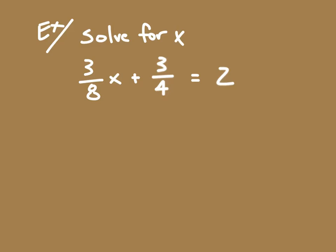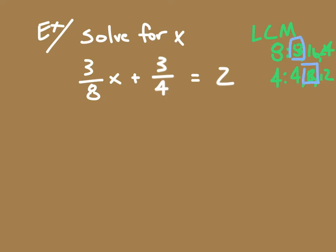Now on an equation like this: three-eighths times x plus three-fourths is equal to two. We want to look at what's our common denominator to eliminate our fractions. We want to find the least common multiple, or LCM. I look at both denominators, which are eight and four, and find the multiples of eight: 8, 16, 24. Multiples of four: 4, 8, 12. The least common multiple is eight.